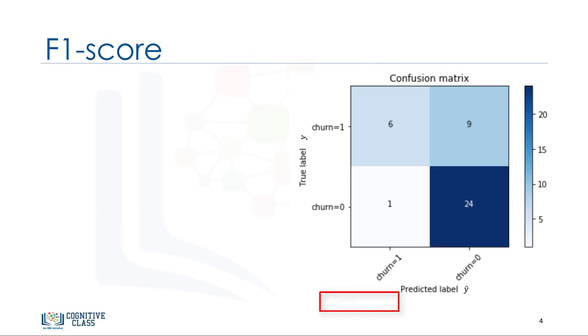Another way of looking at accuracy of classifiers is to look at a confusion matrix. For example, let's assume that our test set has only 40 rows. This matrix shows the corrected and wrong predictions in comparison with the actual labels. Each confusion matrix row shows the actual true labels in the test set, and the columns show the predicted labels by classifier. Let's look at the first row.